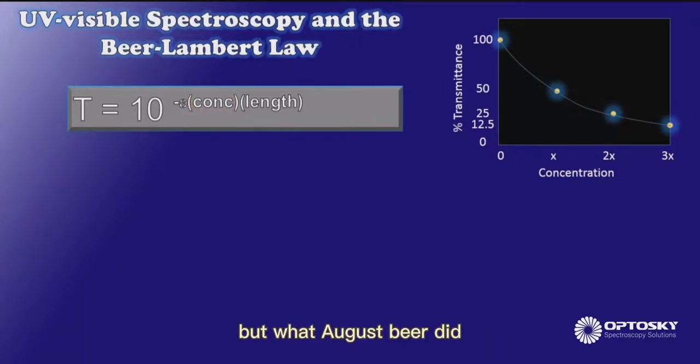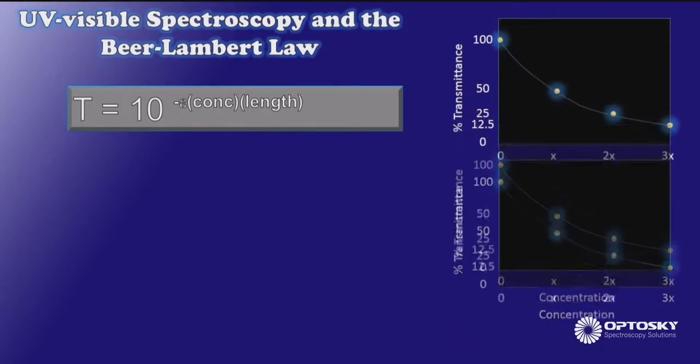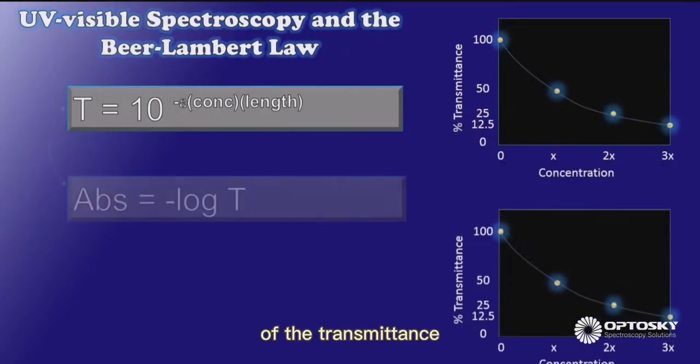But what August Beer did was to convert that percent transmittance into a new unit called absorbance. And he did so by taking the logarithm, or really the negative logarithm, of the transmittance.